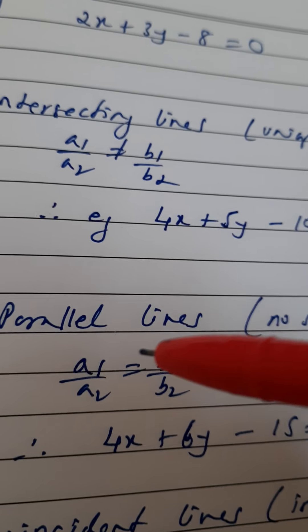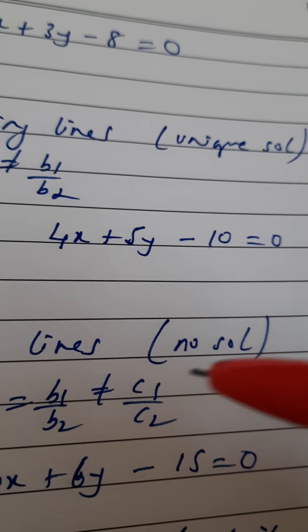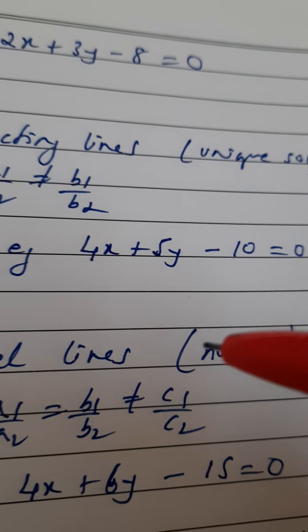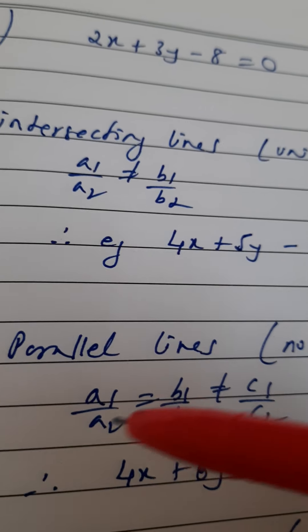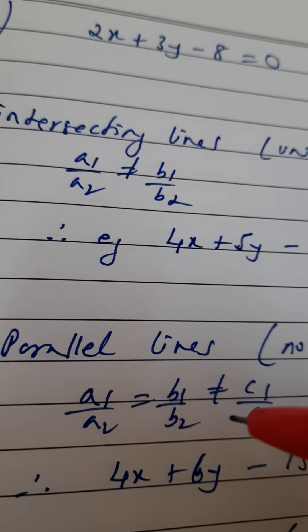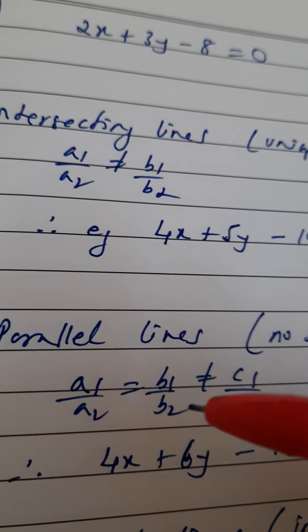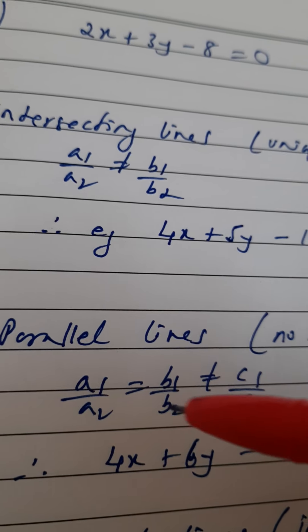Parallel lines means no solution, and the condition for no solution, you remember: a1/a2 equal to b1/b2 not equal to c1/c2. So now these two are equal.